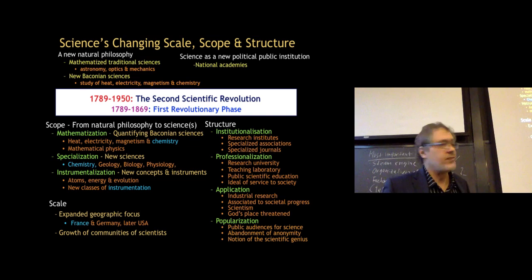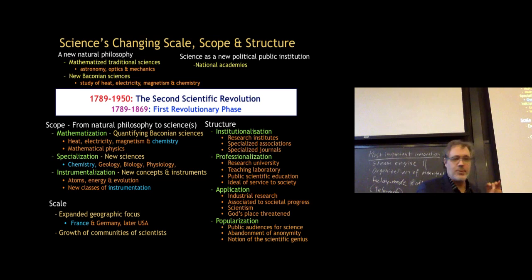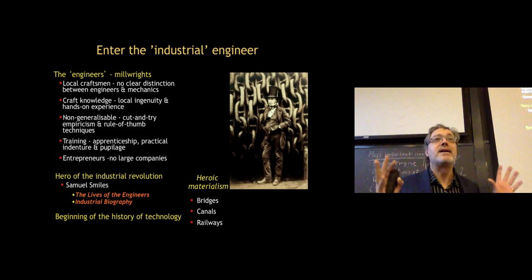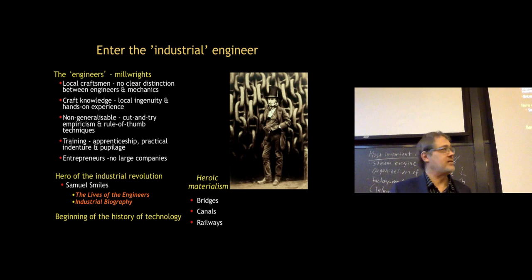A lot of these developments are happening in France. One important development is the engineer, who is really coming into prominence during this period — across the First Industrial Revolution and the Second Industrial Revolution. Here we see one of the most famous engineers in the history of technology, Isambard Kingdom Brunel, standing in front of the Great Eastern ship he was designing. The chains shown are for the ship's anchors.